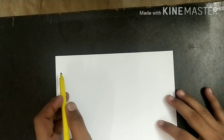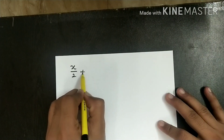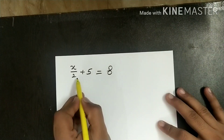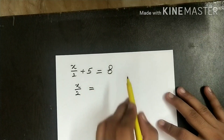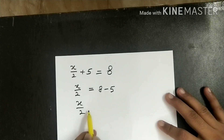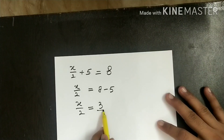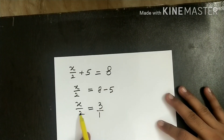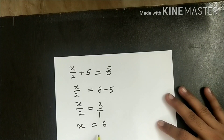Next question: x/2 + 5 = 8. Keep the variable on the left; 5 moves to the right and becomes -5. So x/2 = 8 - 5 = 3. Since 3 means 3/1, we use cross multiplication: x × 1 = x and 3 × 2 = 6. The value of x is 6.